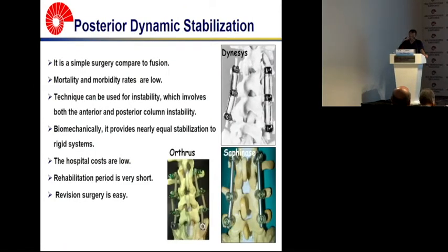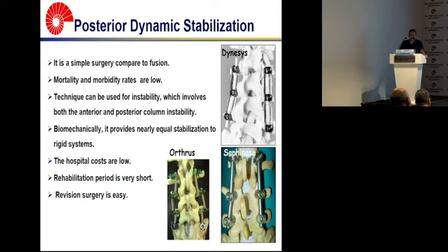Currently, we use Dynesys, Safinas, or Ortho systems for multi-level dynamic stabilization. Because we eliminate the fusion procedure, we also eliminate the risks related to fusion. It is relatively simple surgery compared to fusion. Mortality and morbidity rates are low. The technique can be used for instability involving both anterior and posterior column instability. Biomechanically, it provides nearly equal stabilization to a rigid system. The costs are low, rehabilitation is shorter compared to fusion surgery, and revision surgery is easier.